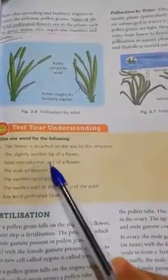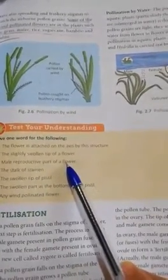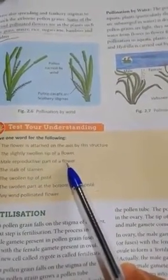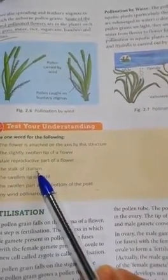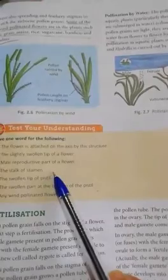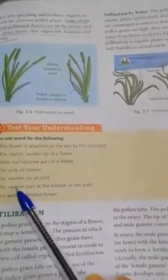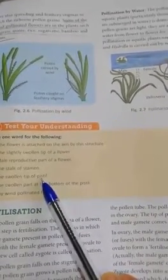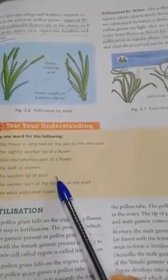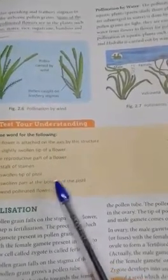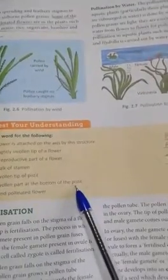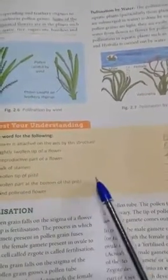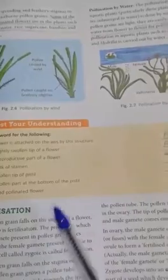Male reproductive part of a flower. Stamines, yes. The stalk of stamen is known as filament. The swollen tip of pistil is known as stigma. Stigma is the swollen tip of the pistil. The swollen part of the bottom of the pistil. What is called that part? Ovary.